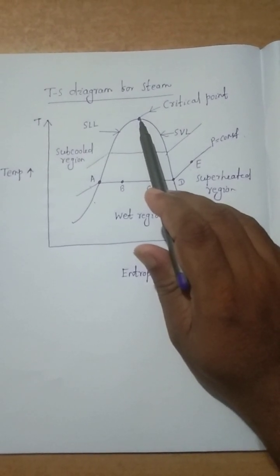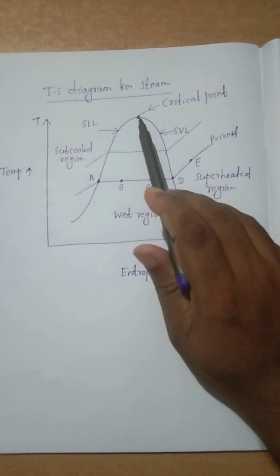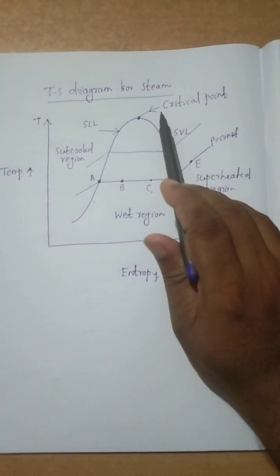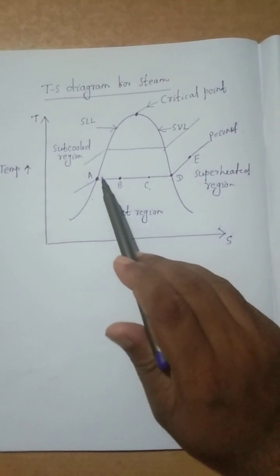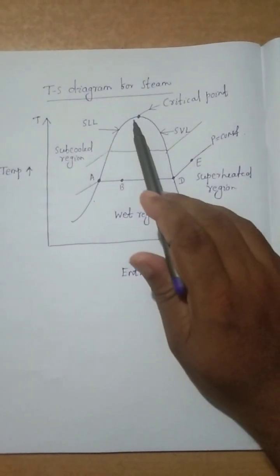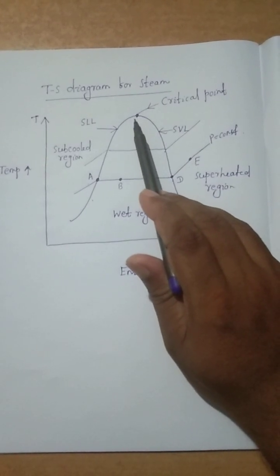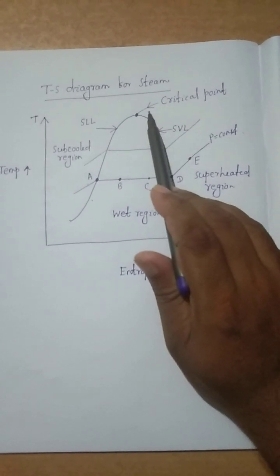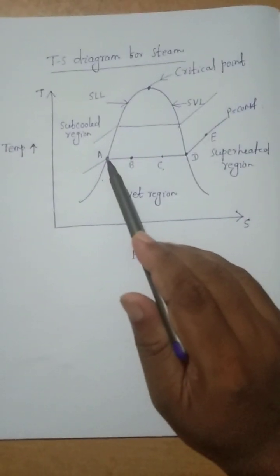If water is maintained at a pressure of 220.09 bar and a temperature of 374.136 degrees centigrade, it is directly converted into superheated steam. Normally, saturated water converts to wet steam, then dry saturated, then superheated; but at critical pressure and temperature, the liquid is directly converted into superheated vapor, which obeys all the gas laws.